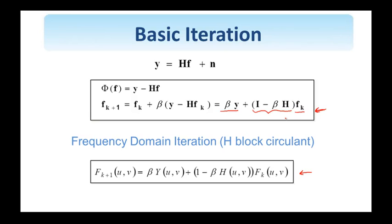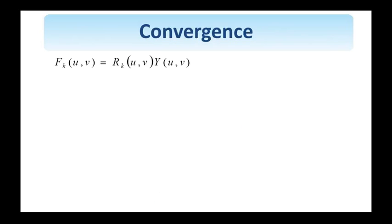We would like now to look at this frequency domain iteration and obtain sufficient conditions for the convergence of the algorithm. We would like now to study the frequency domain iteration we showed in the previous slide. We would like to write the restored image at the k-th iteration step at discrete frequencies (u,v) as the product of the restoration filter at the k-th iteration step with the DFT of the observed noise and blurred image.